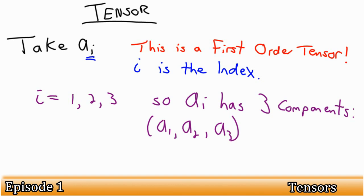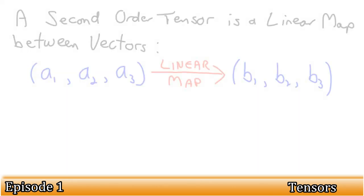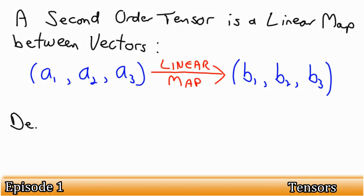Now, consider a second order tensor. This represents a linear map between vectors. In more basic terms, it means we can transform any vector into any other vector by multiplying it by a tensor.